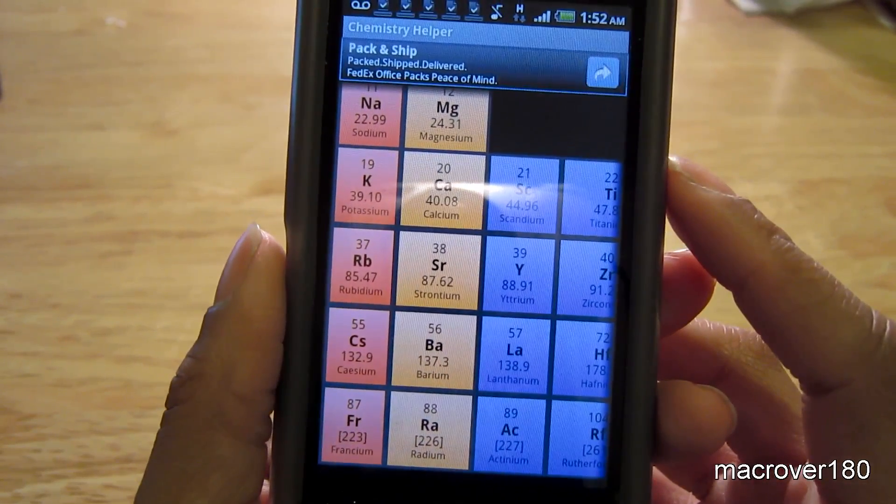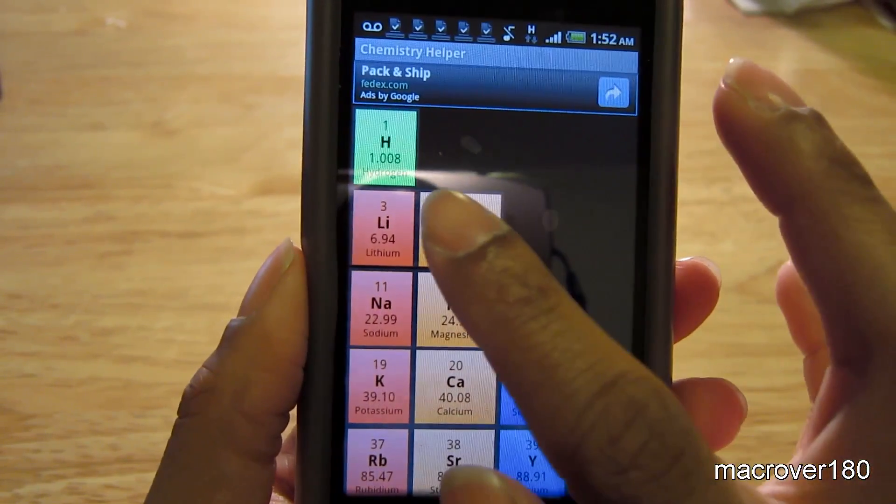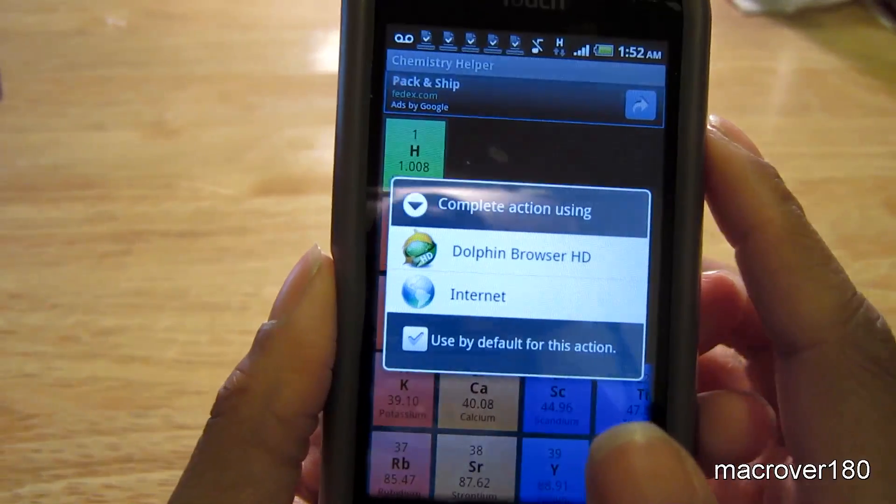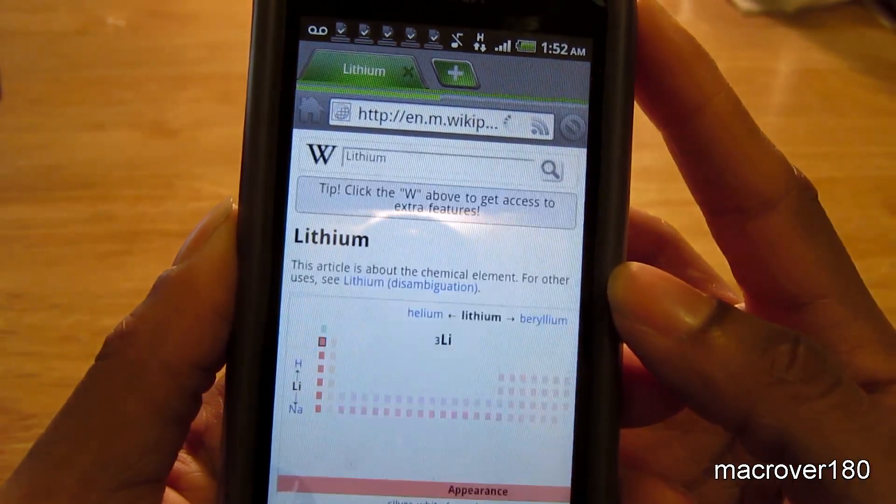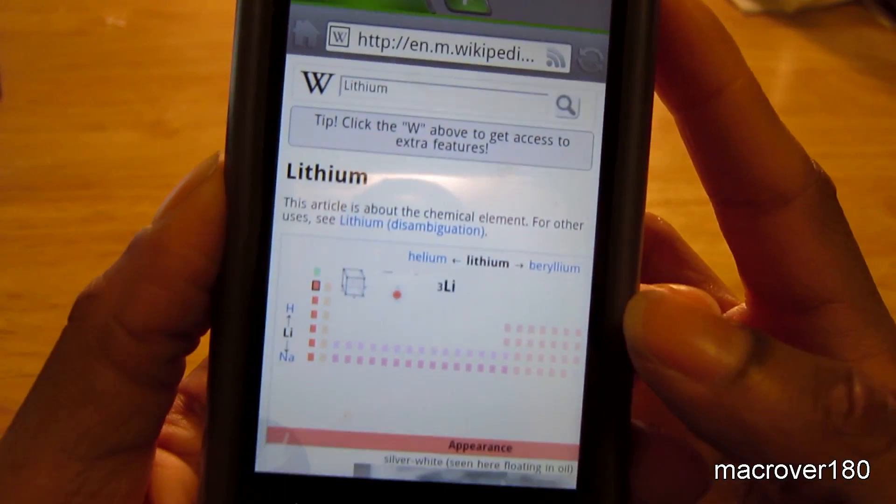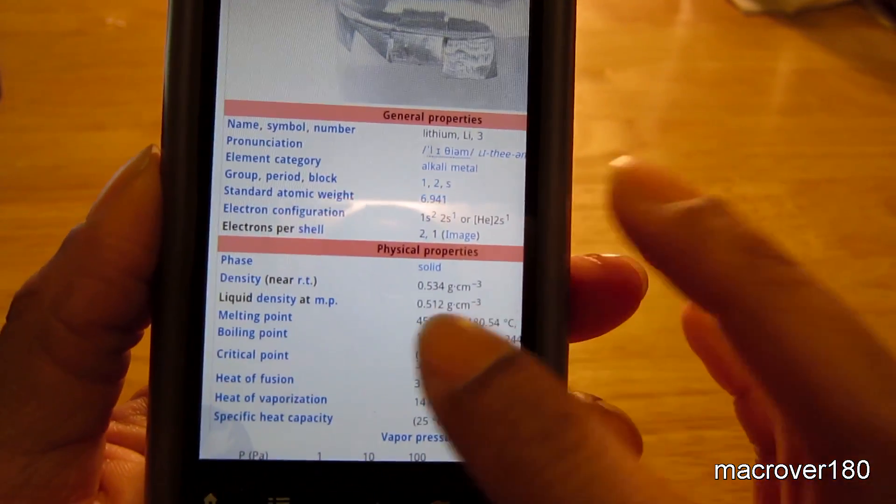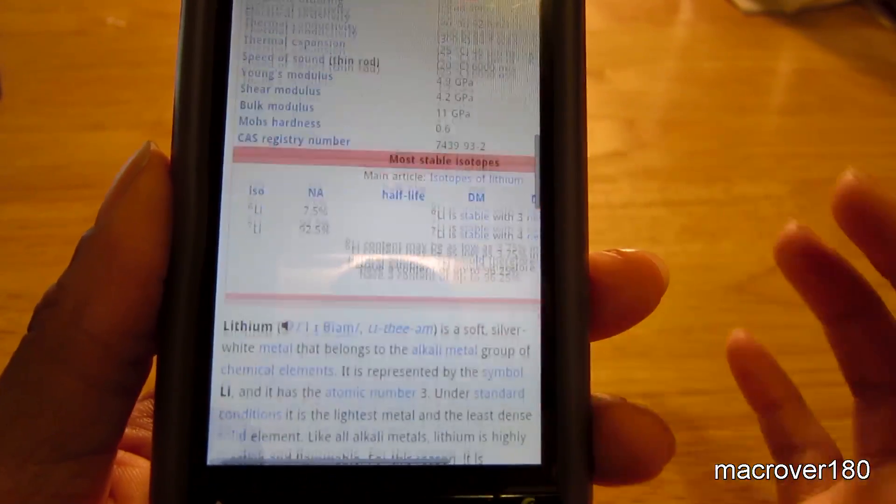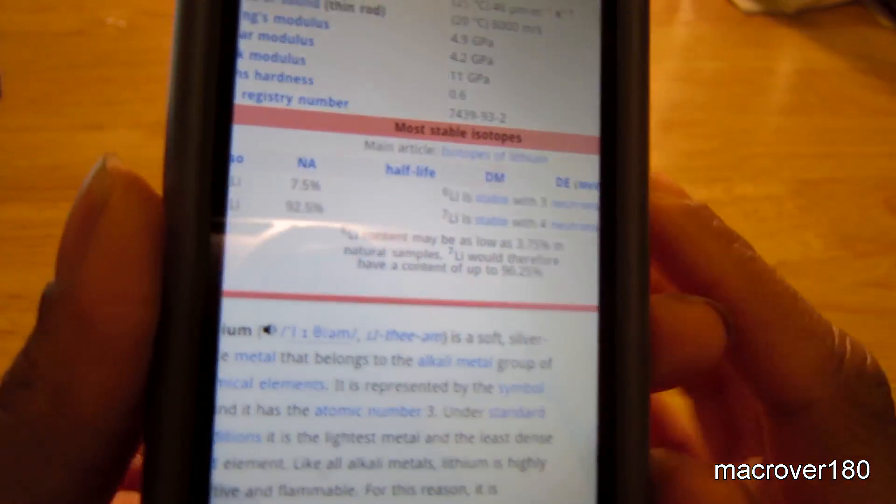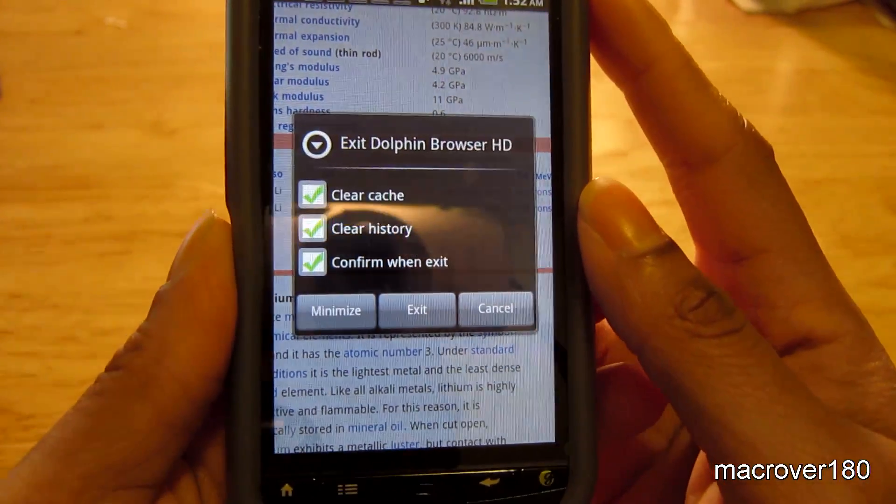And if you'd like to find out more information about a certain element, you click on it and it leads you to the mobile Wikipedia page for that element. And you can read about the physical properties, the general properties, the atomic properties, and most stable isotopes. So that's essentially that for the periodic table.